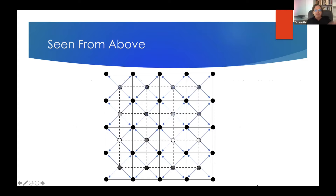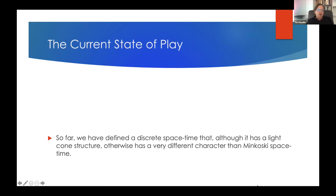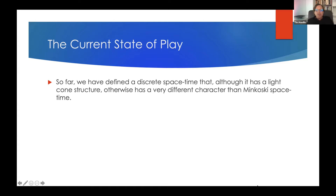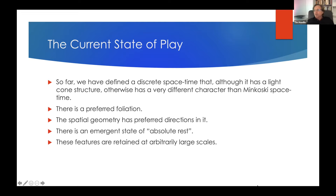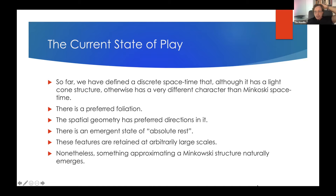So to summarize: we have a discrete spacetime with a light cone structure, but otherwise a completely different character than Minkowski spacetime. There's a preferred foliation, spatial geometry has preferred directions, there's an emergent state of absolute rest — none of which occurs in Minkowski spacetime — and these features retain at arbitrarily large scales; they don't wash out at high resolution. However, and this is kind of a shock: something very close to Minkowski structure naturally emerges.